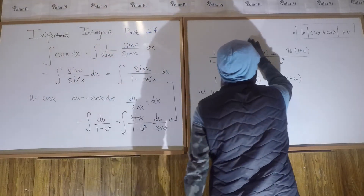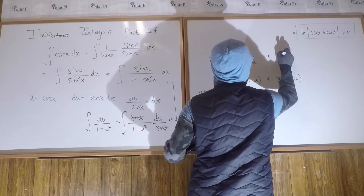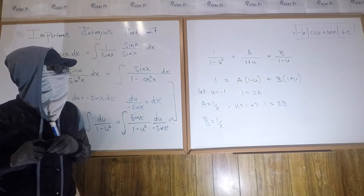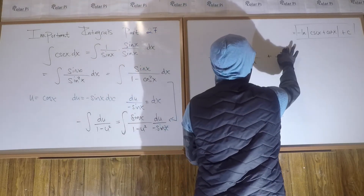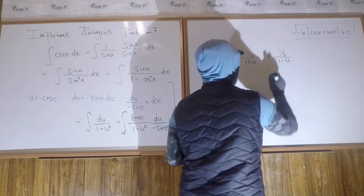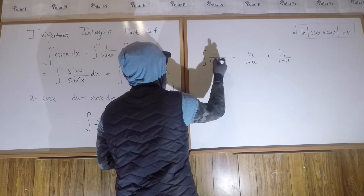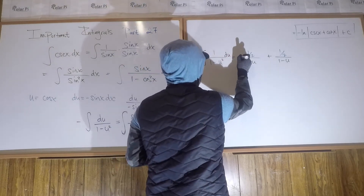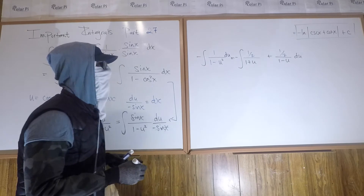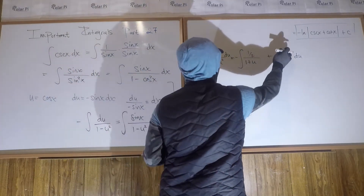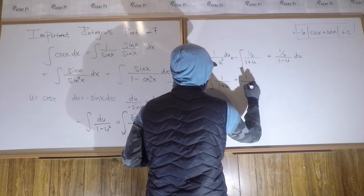We started off saying A over 1 plus u plus B over 1 minus u. We just learned A and B are both 1 half. So we can write the integral as 1 half integral of 1 over 1 plus u du, with a minus sign out front, plus 1 half integral of 1 over 1 minus u du. That's the same as negative 1 half times the integral of 1 over 1 plus u du plus 1 over 1 minus u du.